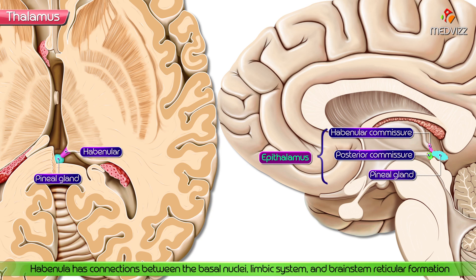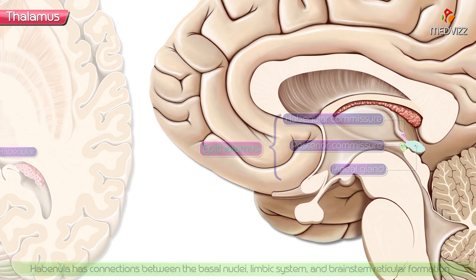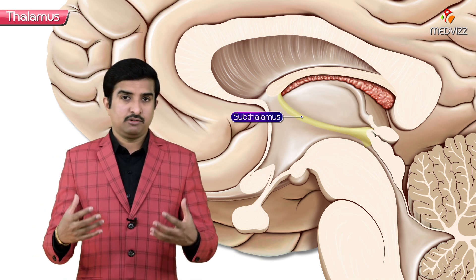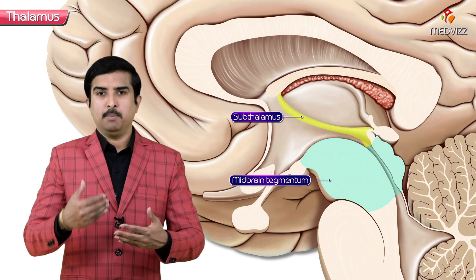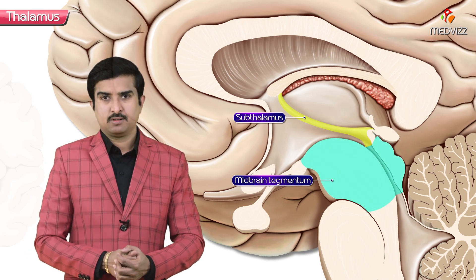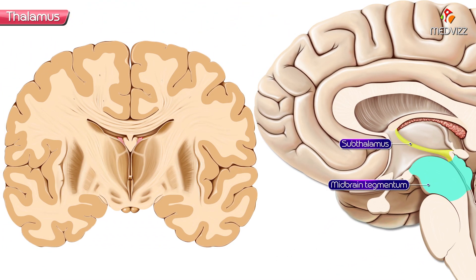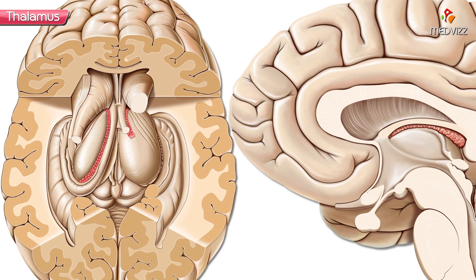The habanula has connections between the basal nuclei, limbic system, and the brainstem reticular formation. The subthalamus is a region that is essentially a continuation of the midbrain tegmentum; the main component is the subthalamic nucleus, which functions as a part of the basal nuclei. The thalamus is the largest subdivision of the diencephalon.